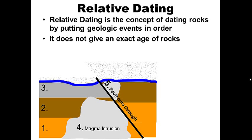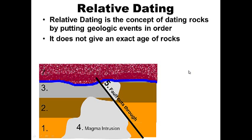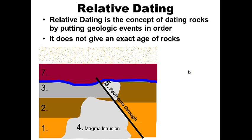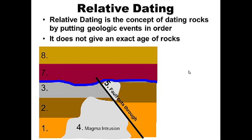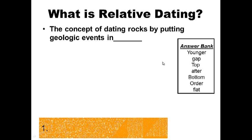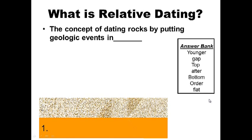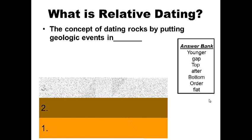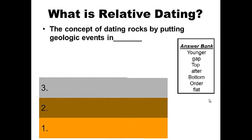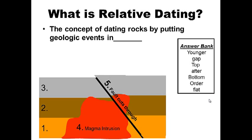Then a fault came through and broke that rock — that would be the fifth event. Then a river or flood came through and eroded the rock away — that would be the sixth event. A new layer forms as the seventh event, and another new layer as the eighth. So that's what relative dating is: putting geologic events in order. Use the answer bank to determine which words best complete the sentence in your notes.